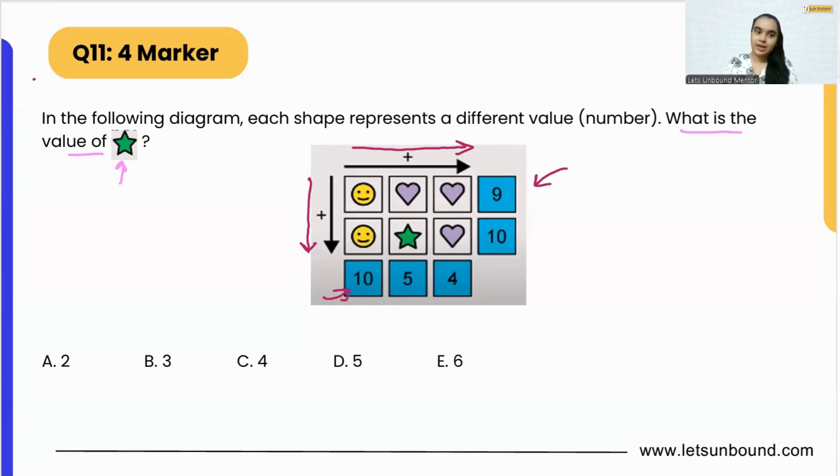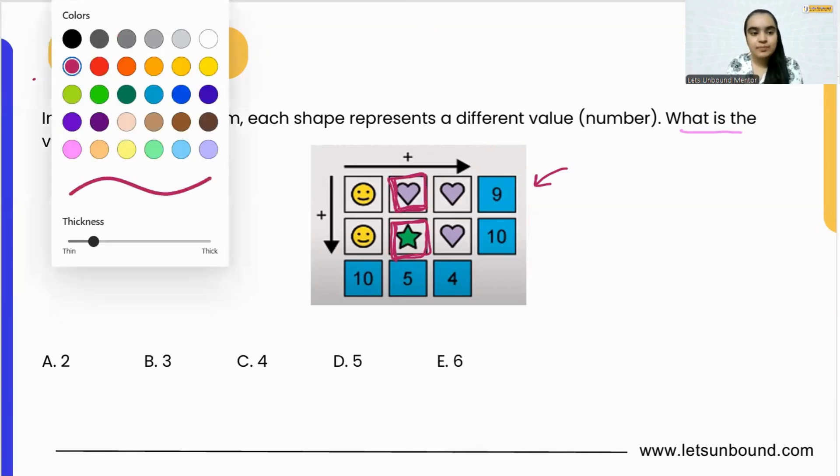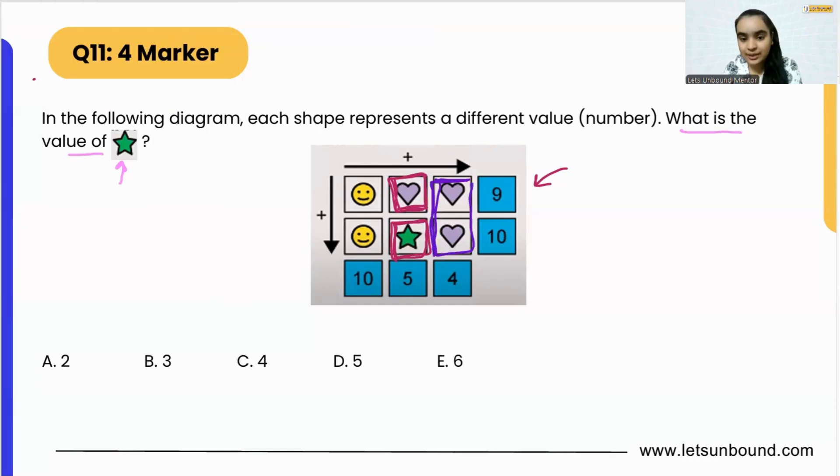Now I want to find out the value of this star, but to find out the value of the star, I need the value of heart, right? So what I will do, I will first find out the value of heart by looking at this column. This column tells me that heart plus heart equals four.